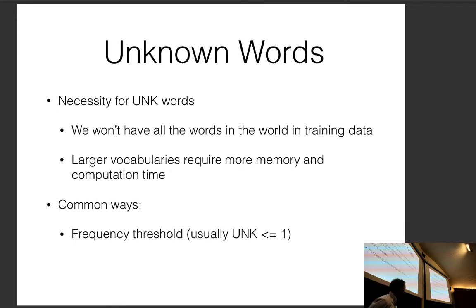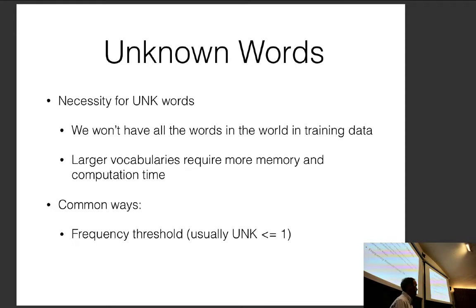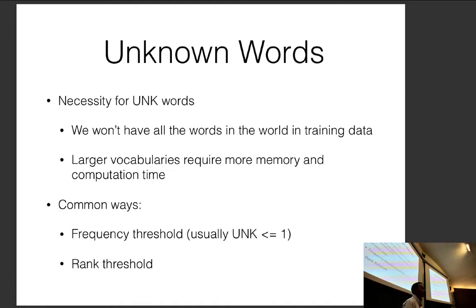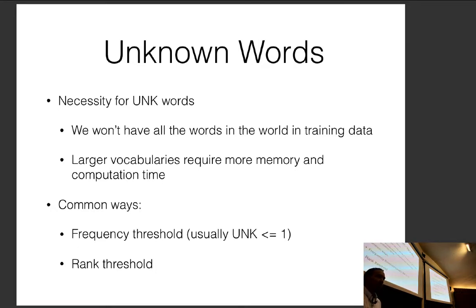Common ways to handle unknown words: a frequency threshold — words appearing only once in the corpus get replaced with a special unknown word token; or a rank threshold — keep only the top 40,000 most frequent words and replace the rest with the unknown token. There's also the increasingly popular approach of splitting rare words into smaller subword pieces. I won't cover that in detail now, but we'll discuss it later.